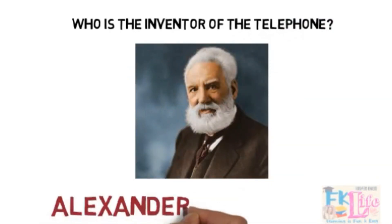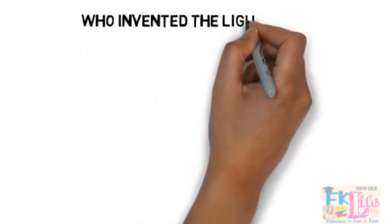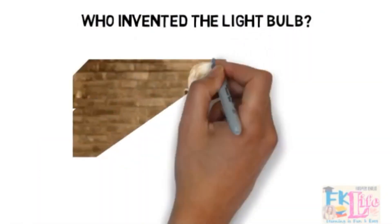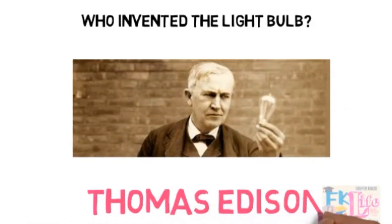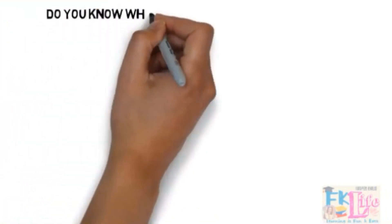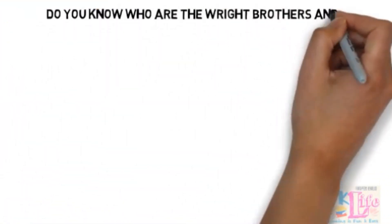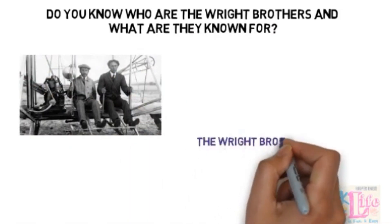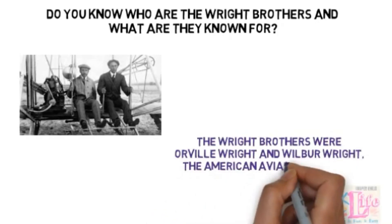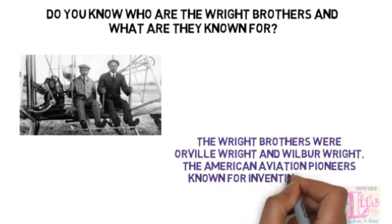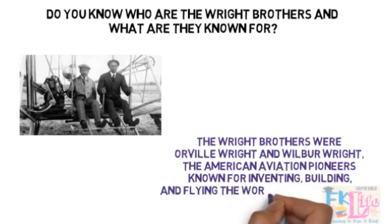Alexander Graham Bell. Who invented the light bulb? Thomas Edison. Do you know who the Wright brothers were and what they are known for? The Wright brothers were Orville Wright and Wilbur Wright, the American aviation pioneers known for inventing, building, and flying the world's first successful motor-operated airplane.